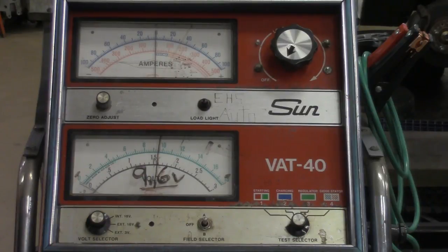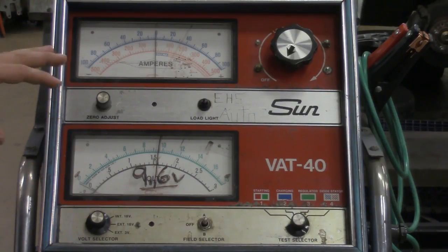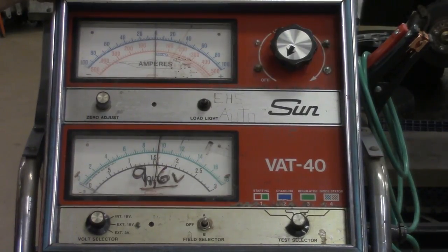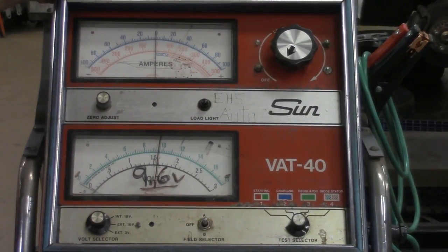Today we're going to take a look at how to do a starter motor current draw test. We're going to use the VAT40 machine. It's a little bit of an older model, but that's not a big deal. It works extremely well, so we're going to go over the setup procedures. The purpose of this test is to find out how much current our starter motor is drawing from the battery when we crank our engine over.